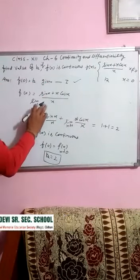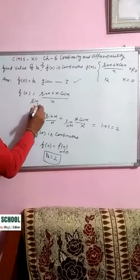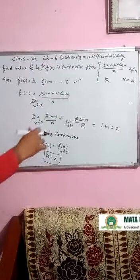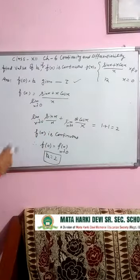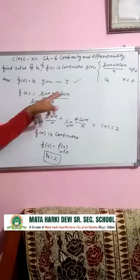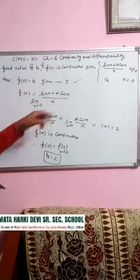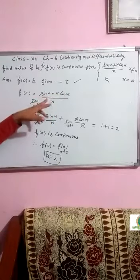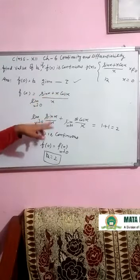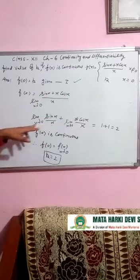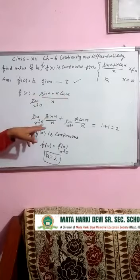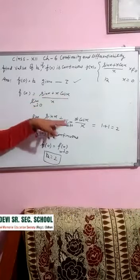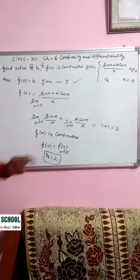Now limit x tends to 0 of f(x) kya ho jayegi? We have to check at x tends to 0: limit of sin(x) plus x·cos(x) divided by x. Isko hum alag alag divide karenge — sin(x) divided by x, limit x tends to 0, plus x·cos(x) divided by x, limit x tends to 0.